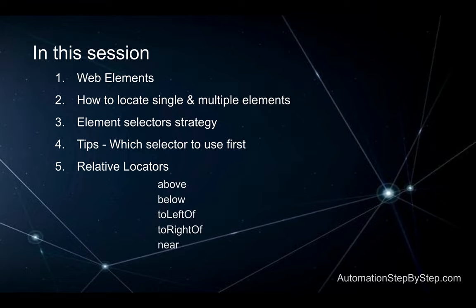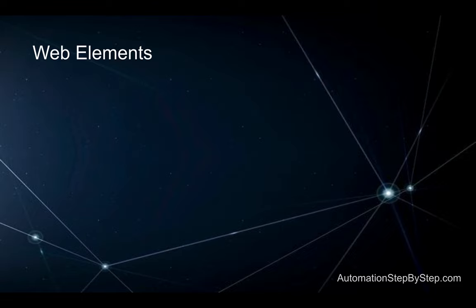With relative locators we can find elements based on neighboring elements, using functions like above, below, is left of, is right of, near, etc. This is going to be very easy and very interesting. So let's get started with web elements.